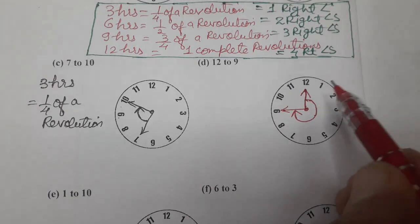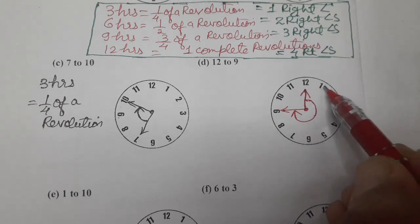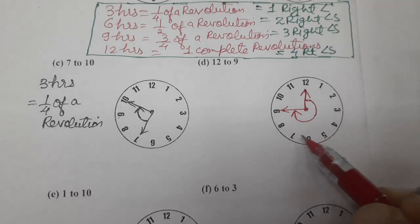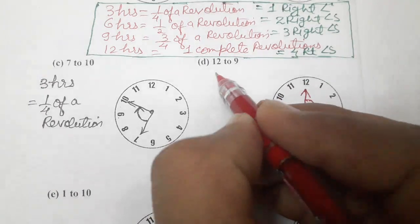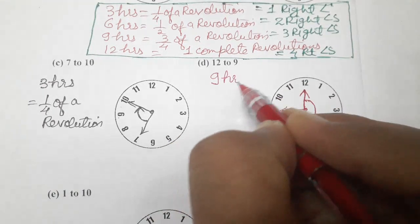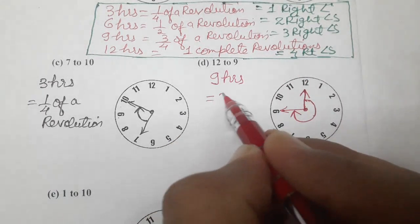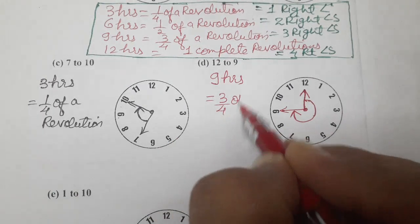Now, just count. How many hours? 12 to 9. 1, 2, 3, 4, 5, 6, 7, 8, 9. So, how many hours? 9 hours. And for 9 hours, we know it is 3 fourth of a revolution.